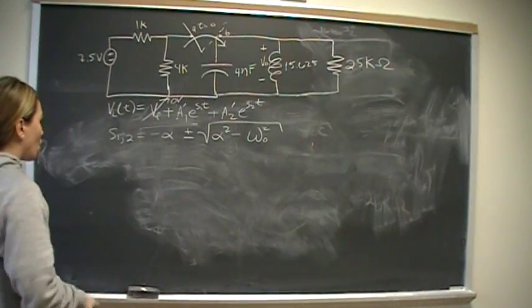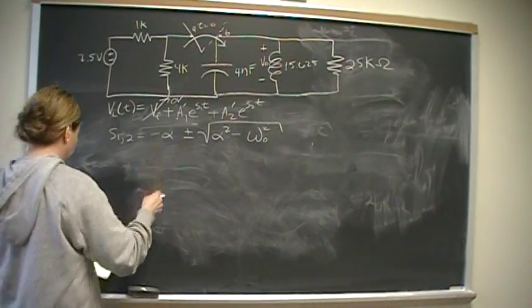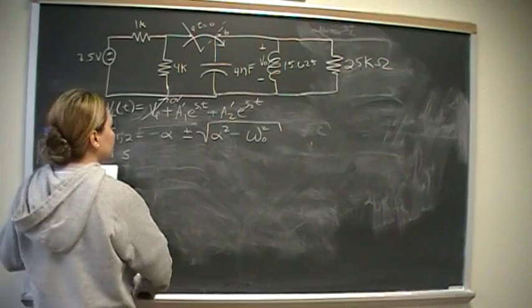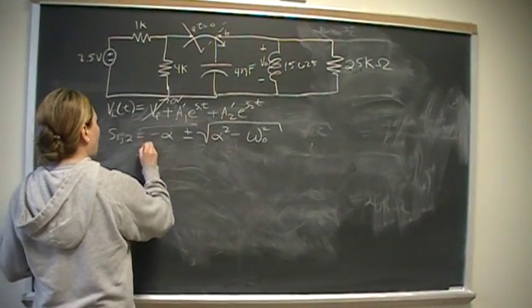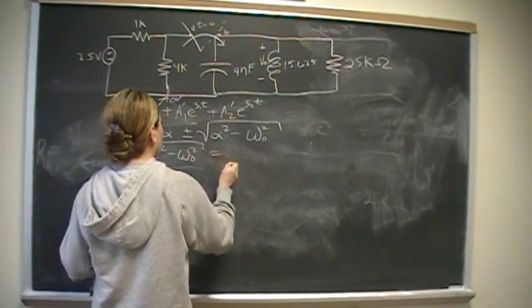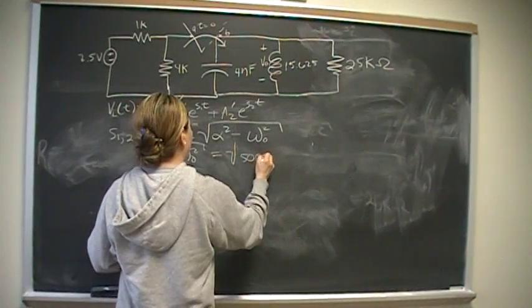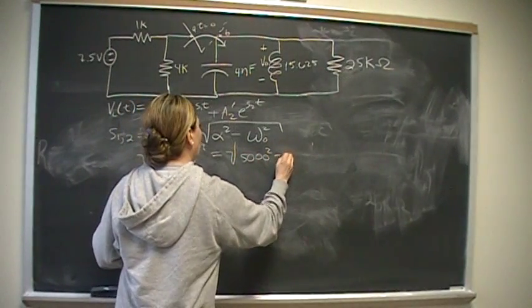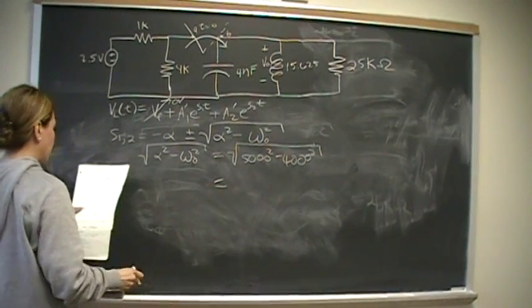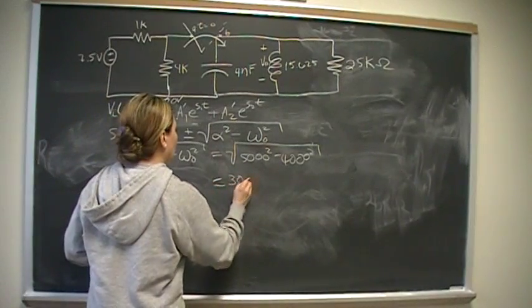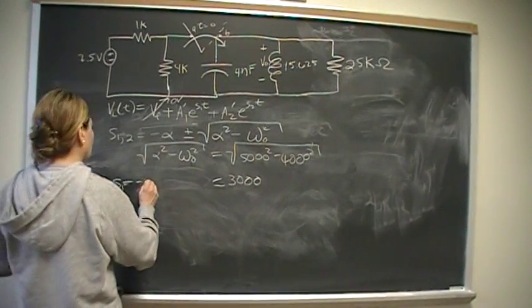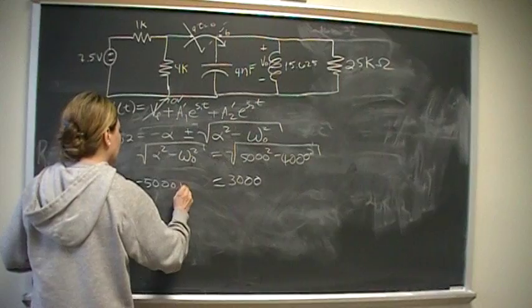Okay. Well, what is that? We solved for alpha earlier before, and so S1, well, this is the common thing, so let's solve for that. Root of alpha squared minus omega naught squared will be root of 5,000 squared minus 4,000 squared. Put that into your calculator, you should get 3,000. So then S1 will be negative 5,000 plus 3,000.